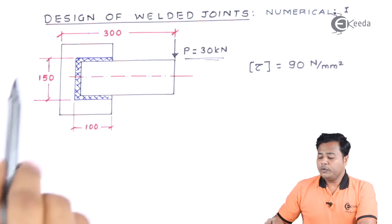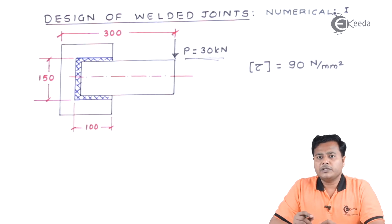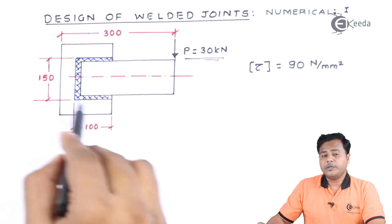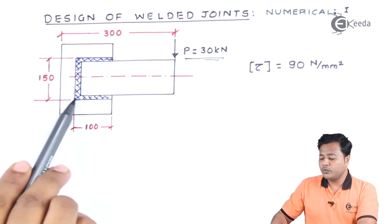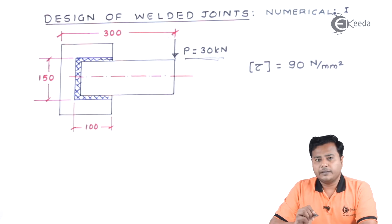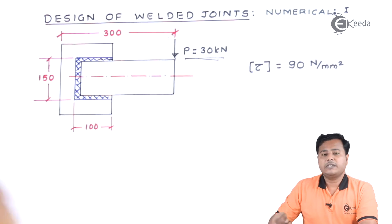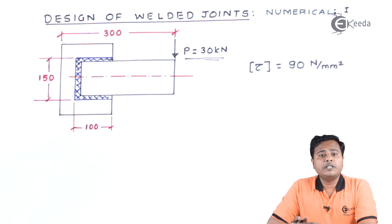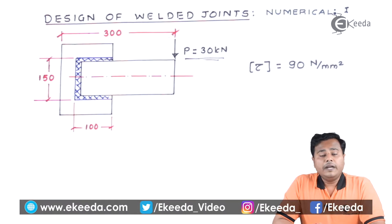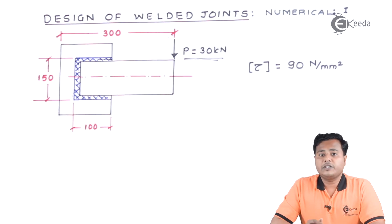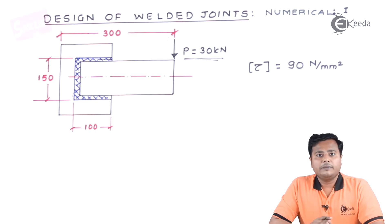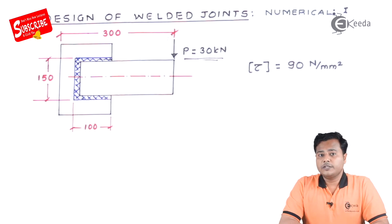There is a small assumption here: we know that the weld joint has very small dimensions, which are negligible compared to the overall dimensions of the given body. So we can consider the whole weld section as a single line, making a C-line. If you remember the formulae for finding out the center of gravity of line segments from engineering mechanics, you will be able to find out the center of gravity for this particular C-section.